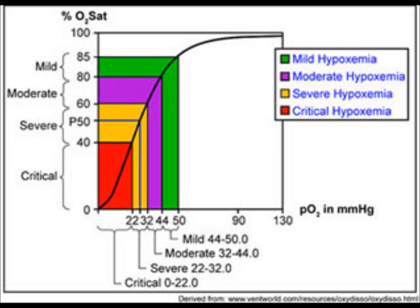If you have a mixed venous sample it's going to be lower, but I don't think they use this curve with mixed venous samples. The horizontal part of the graph is the PO2, or PaO2, which in a healthy normal adult should be 80 to 100 mmHg, and the midpoint is usually about 93.